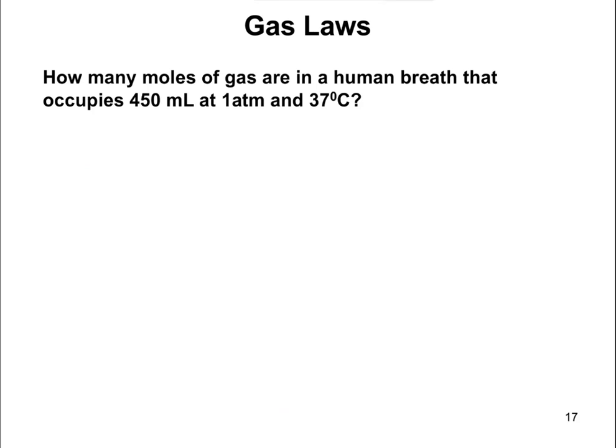This last problem is a little different. It asks: how many moles of gas are in a human breath that occupies 450 milliliters at 1 atmosphere and 37 degrees Celsius? Nothing is being changed here — no temperature going up or pressure going down. We're simply using PV equals nRT to solve for n, the number of moles. R is a constant, and we have temperature, volume, and pressure.